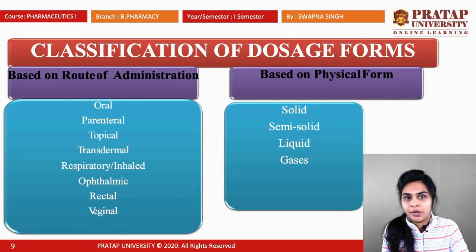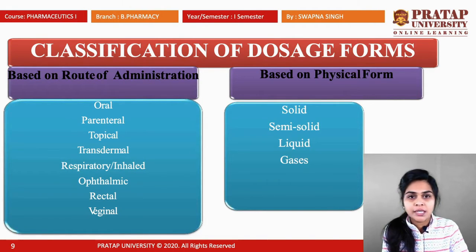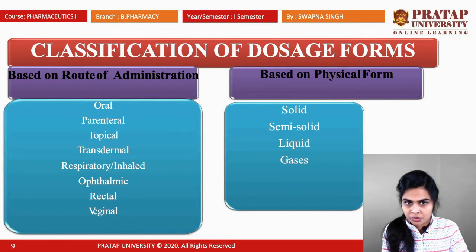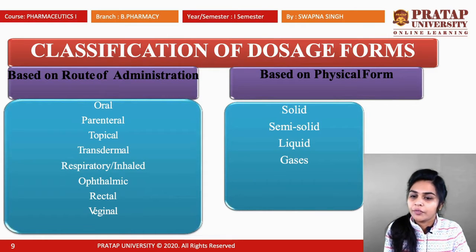Here is the classification of dosage forms based on two different criteria. The first is based on route of administration, which includes oral, parenteral, topical, transdermal, respiratory or inhaled, ophthalmic, rectal, and vaginal routes. The second classification is based on physical form.